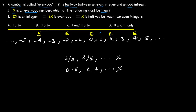Odd numbers include one, three, five, seven, nine and their negatives: negative one, negative three, negative five, negative seven, negative nine. Integers are either odd numbers or even numbers. There is no in-between. Every integer is classified as either odd or even.